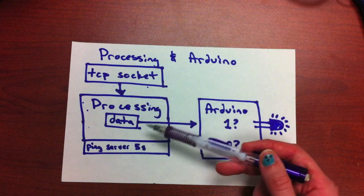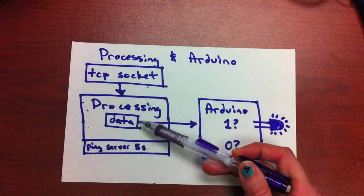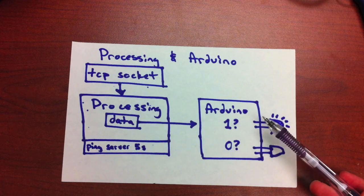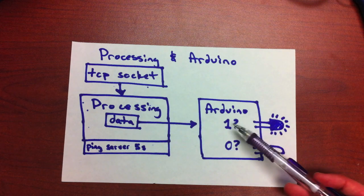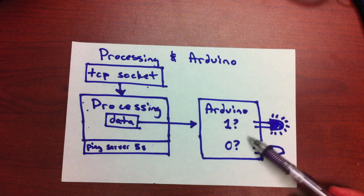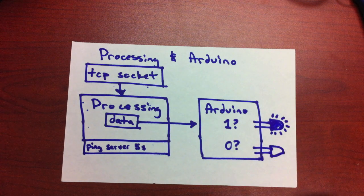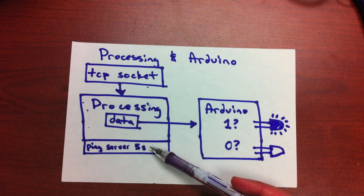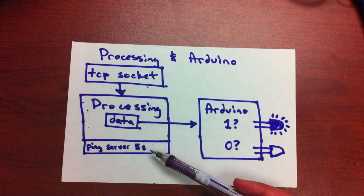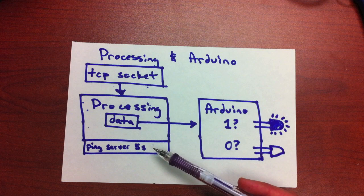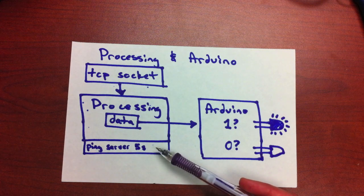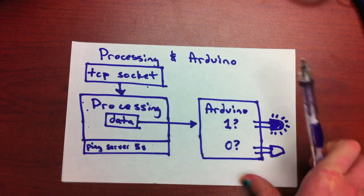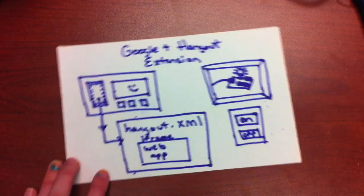For Processing and Arduino, it's really straightforward. Processing is listening to a TCP socket for all of the data coming in, and then with that data it's sending it off to the Arduino, where it checks for basic values — if it's a one, turn on the LED; if it's a zero, turn off the LED. The Processing sketch also checks the connection with the socket every five seconds to make sure it hasn't closed accidentally or gone down.